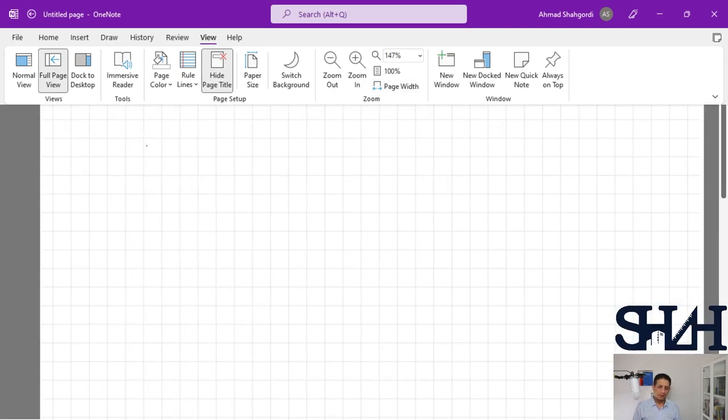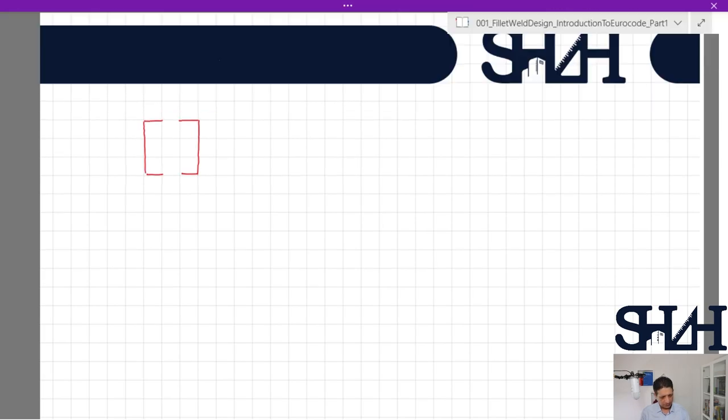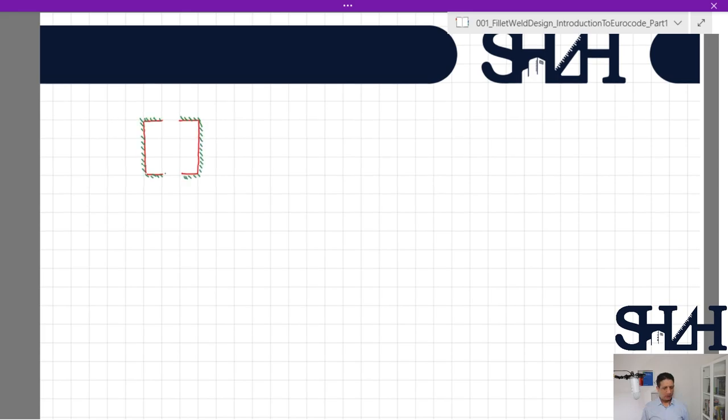Assume we are going to have a fillet weld for two channels and they are going to be welded by this green hatch. To dimension this fillet weld or any other kind of fillet weld, first we need to transfer all the loads to the center of the fillet weld. Also, we need to calculate the geometry of the weld and calculate the moment of inertia, area of the weld, and then we can continue with either directional method or simplified method.